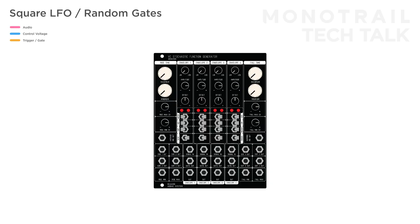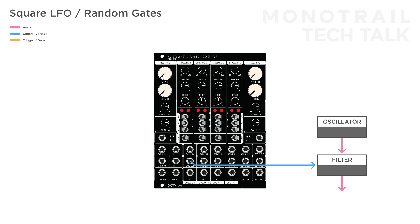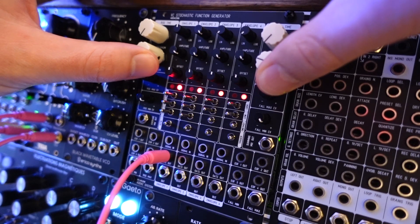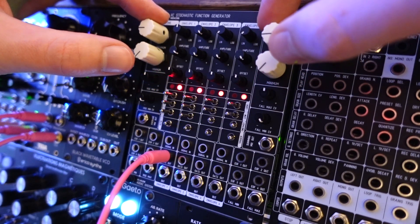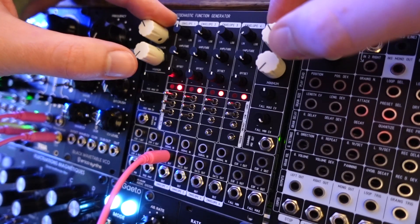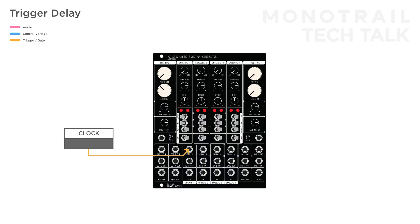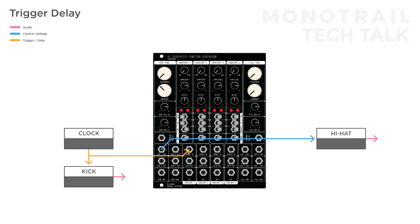The extra gate and end-of-phase outputs allow for creative trigger and gate generation. In loop mode, the gate output can be used as a square wave LFO with variable duty cycle, or when randomization is allowed, random gates. When you feed a steady clock into the input in trigger mode, the end-of-rise trigger output can be used as a trigger delay. For example, when you use a steady clock to trigger a kick, you can use the trigger delay to trigger a hi-hat and set a manual swing. In this setup, you can use the max rise value to create some subtle randomization if you'd like more organic, wobbly beats.